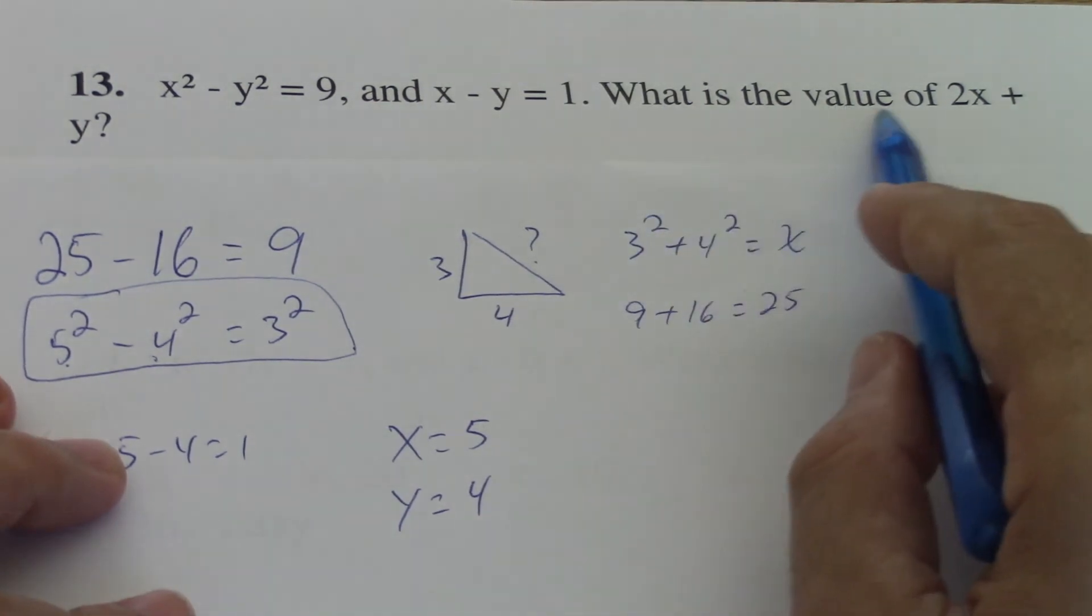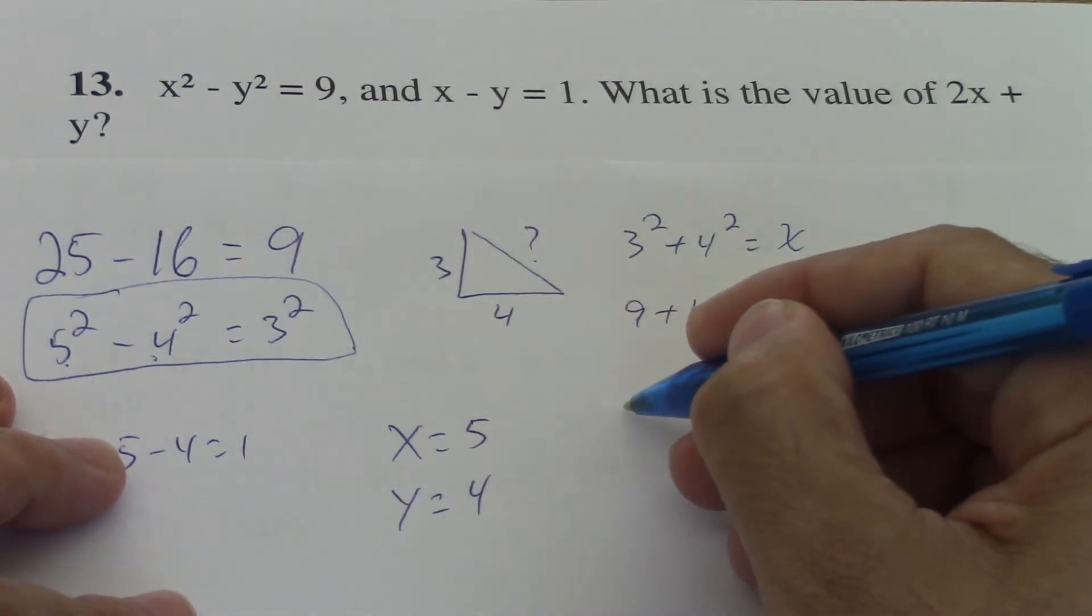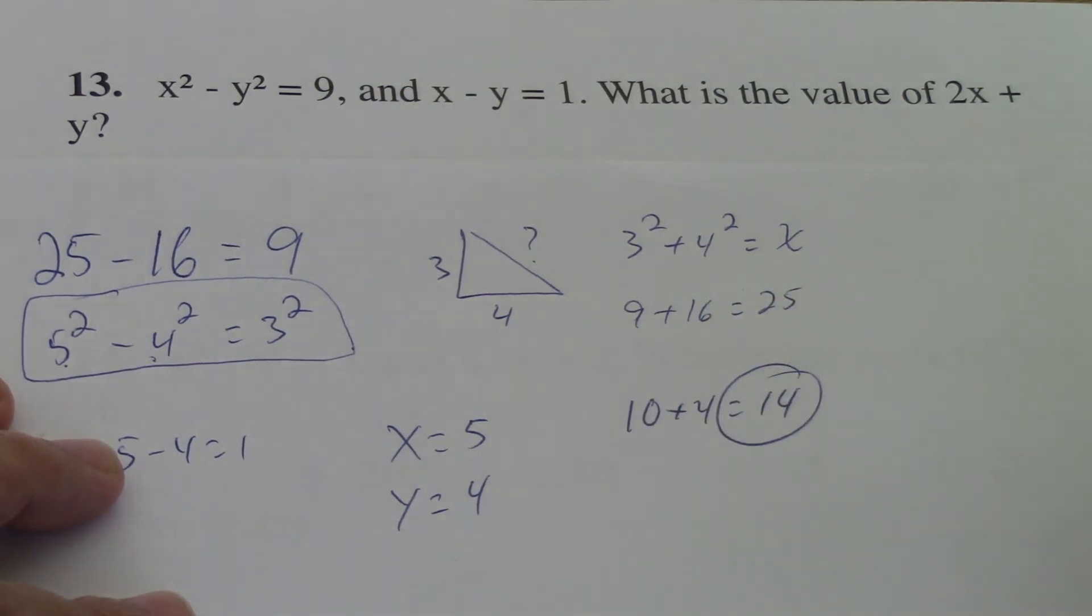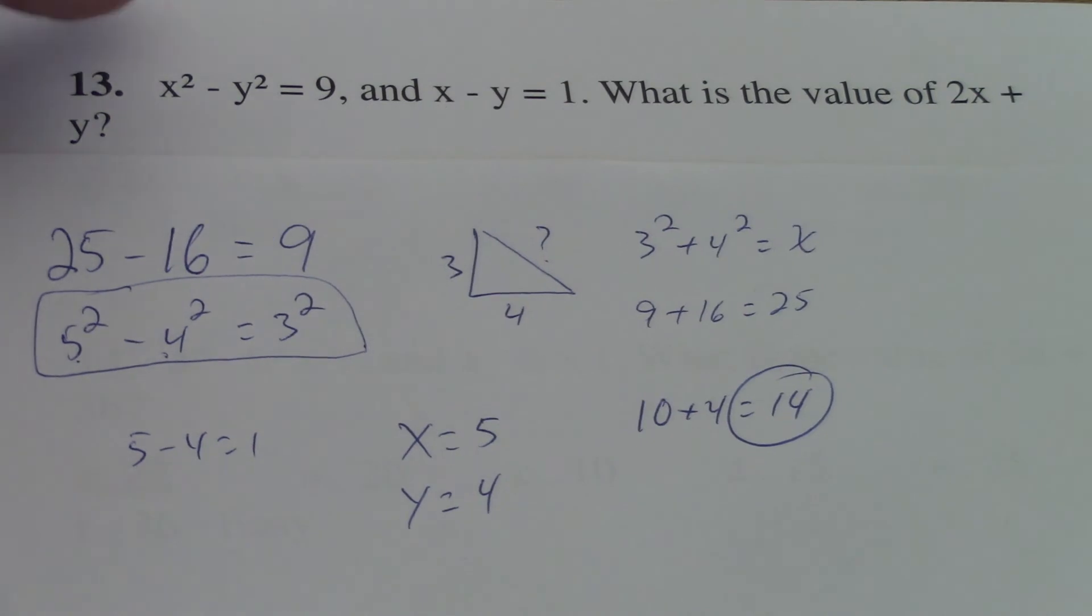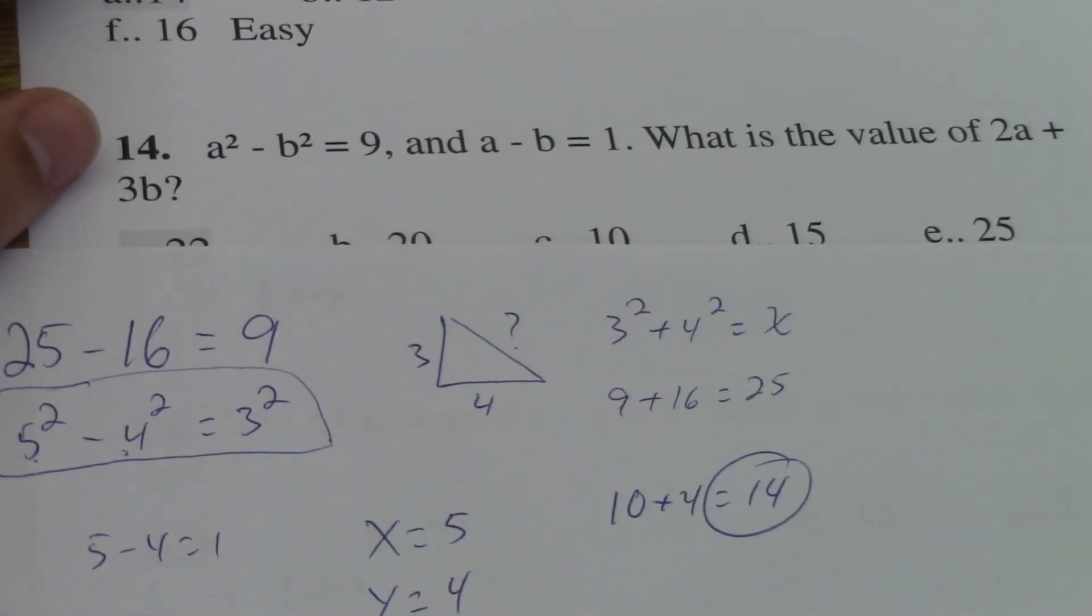Now you go to the question: what is the value of 2x plus y? So 2x plus y that would be 10 plus 4 equals 14, and that is the answer for this question. Remember that here what matters is that you work as fast as possible.